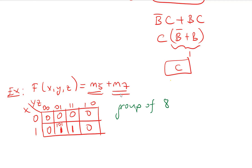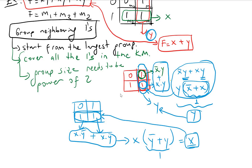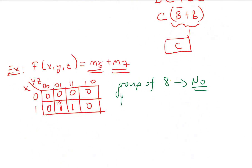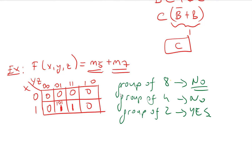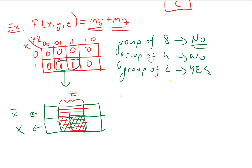The rule is to start from the largest group. Can we make a group of eight? No. Group size must be a power of two. Can we make a group of four? No. We can make a group of two. The top row is X-not and the bottom row is X. These two cells share the Z column, so the two cells are identified by X and Z.